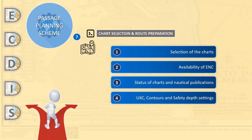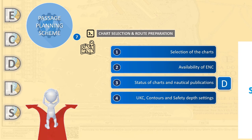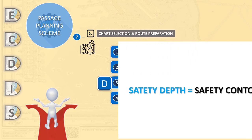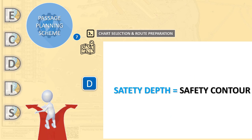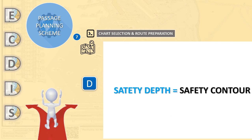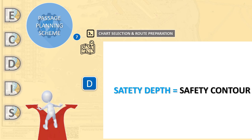Of all the safety settings, the most attention should be paid to the safety contour. In ECDIS, anti-grounding alerts are based on crossing of the safety contour. Also, the navigator should analyze whether the available water depth is sufficient in respect of the vessel's draft.